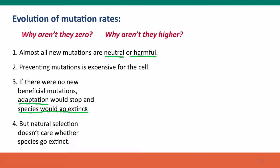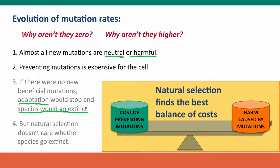But natural selection doesn't care. Natural selection doesn't care whether adaptation happens or not. Natural selection doesn't care whether species go extinct. Natural selection is just a passive process that happens because we have heritable genetic variation — it's inevitable. And so, mutation rates do evolve. They are a product of natural selection to find the best mutation rate for the organism.